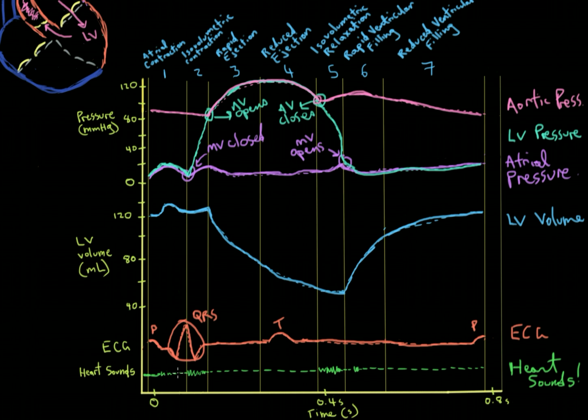At atrial contraction, the two major ones that we're focused on are the ones between isovolumetric contraction and at isovolumetric relaxation. There is a slight heart sound at atrial contraction, but we won't really worry about that one. There's also a slight heart sound here at rapid ventricular filling, but we won't worry about that one either. We'll look at these two: this one here and this one here. This is the lub, and this is the dub.